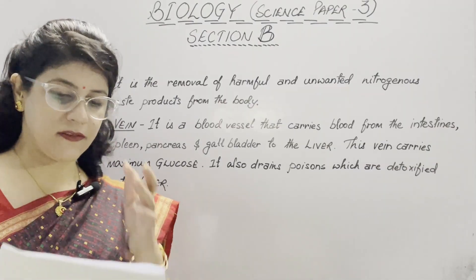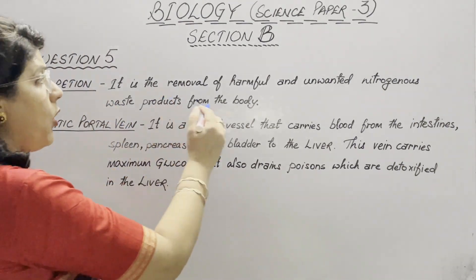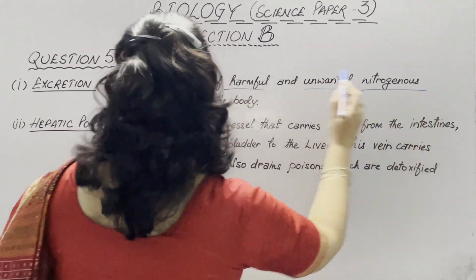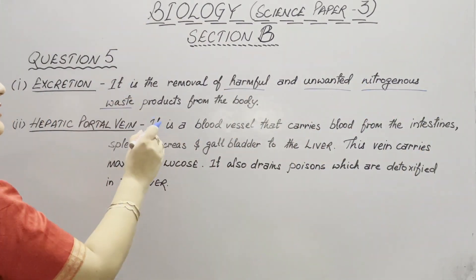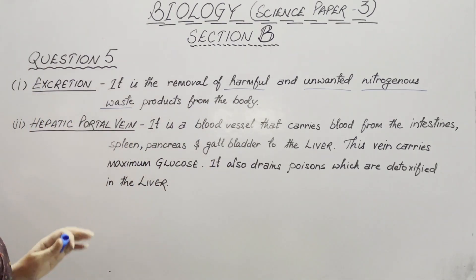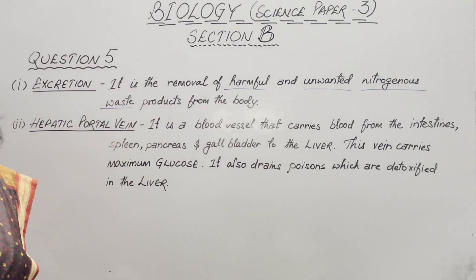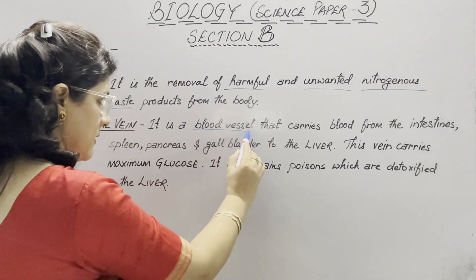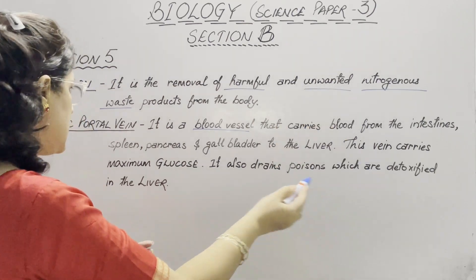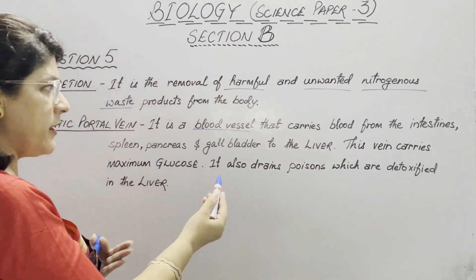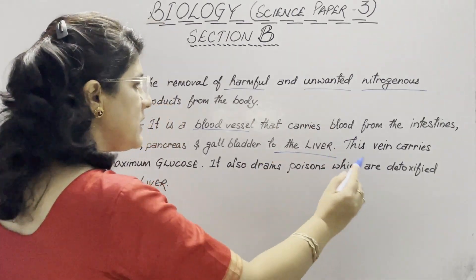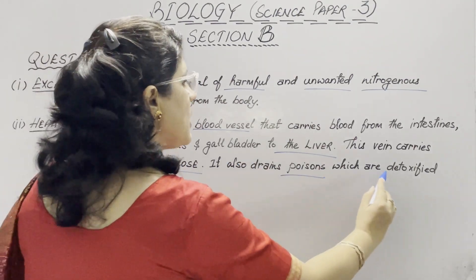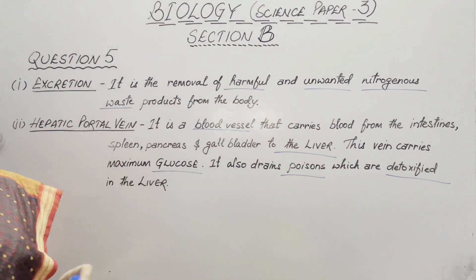In question number 5, the first part is to define excretion. Excretion is the removal of harmful and unwanted — basically nitrogenous — waste products from the body. The second part asks the significance of the hepatic portal vein. It is a blood vessel that carries blood from the intestines, spleen, pancreas, and gallbladder to the liver. This vein carries maximum glucose and also drains poisons which are detoxified in the liver.